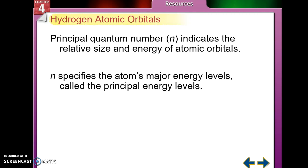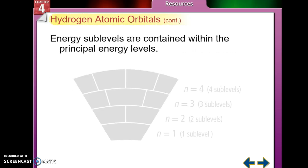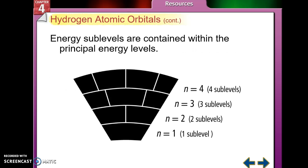The principal quantum number is kind of like your house number — it tells me what energy level that electron is on. These are our principal energy levels, and each energy level has sub-levels in it.